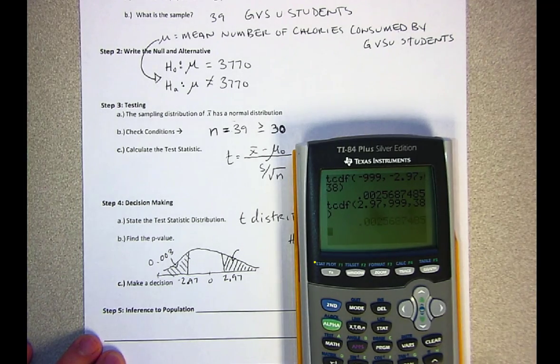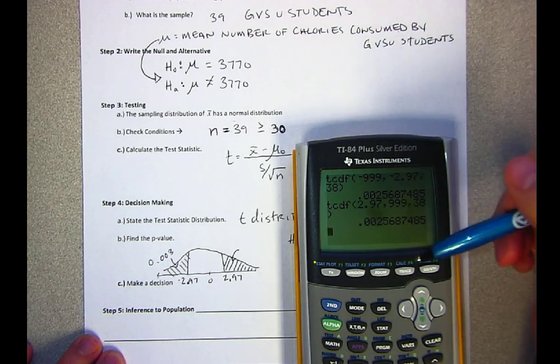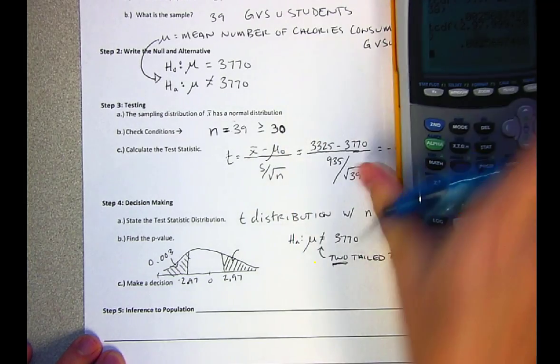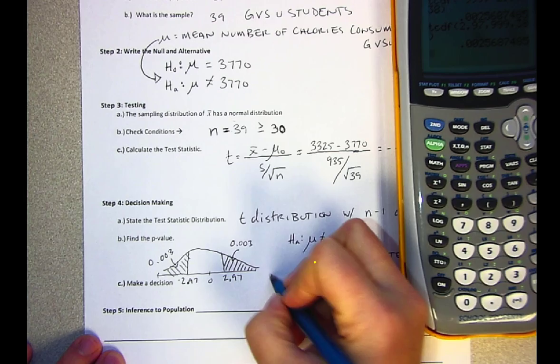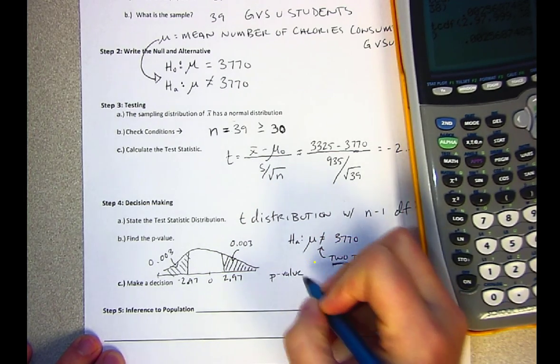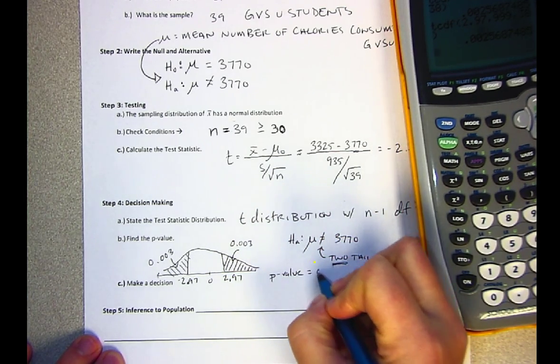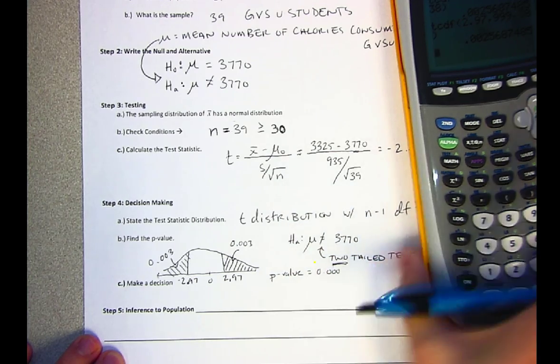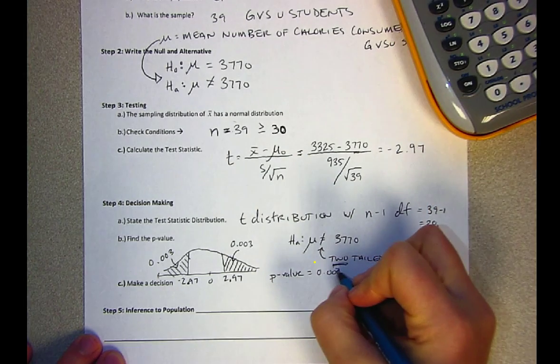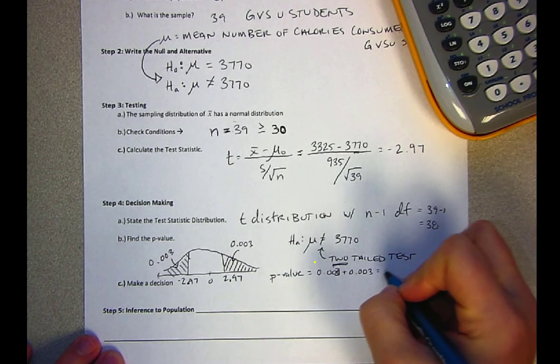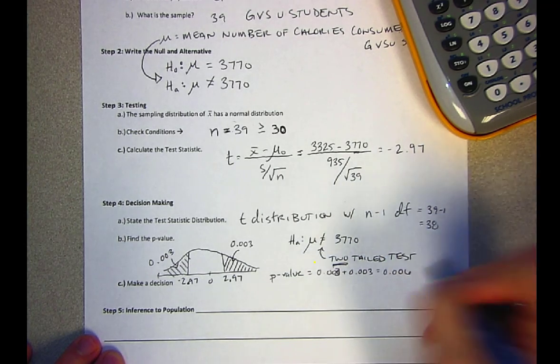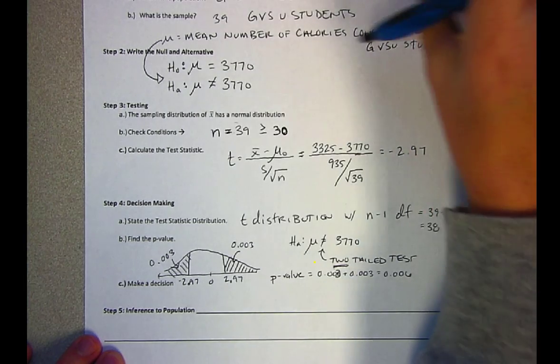What you'll notice is they're the exact same number. That's because these are symmetric curves. I know that the area above 2.97 would be the same as the area below negative 2.97. So you could find one tail and multiply it by two. You can find both and add it together. There are a variety of ways.